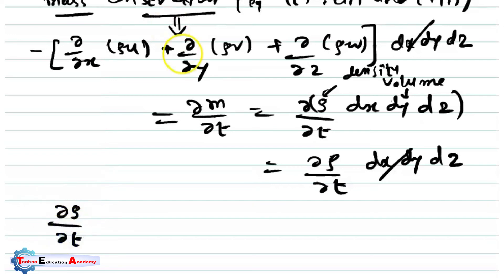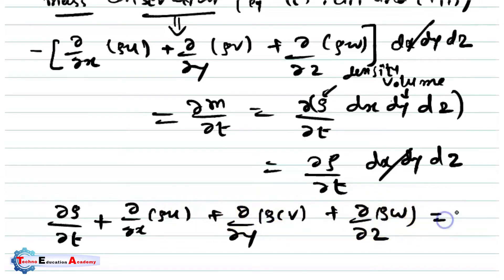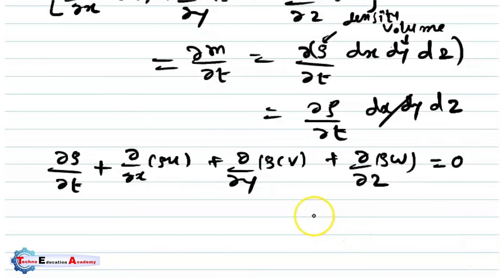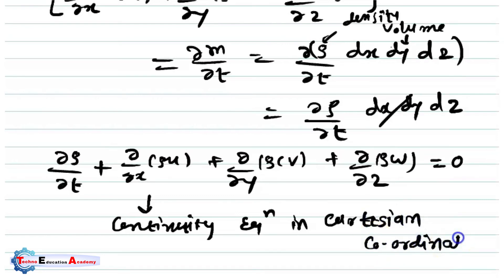Summing Equations 1, 2, and 3, and equating to the rate of change of mass, after moving ∂ρ/∂t to the left-hand side the negative sign becomes positive, giving the general continuity equation in Cartesian coordinates: ∂ρ/∂t + ∂(ρu)/∂x + ∂(ρv)/∂y + ∂(ρw)/∂z = 0.